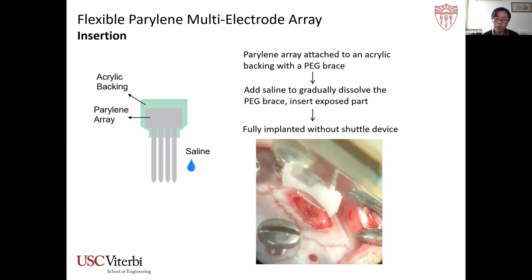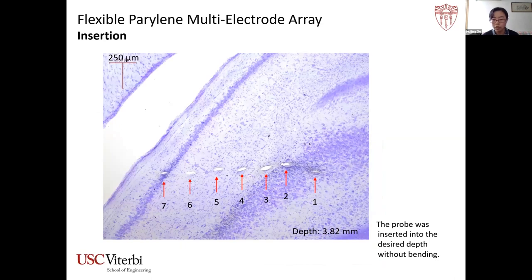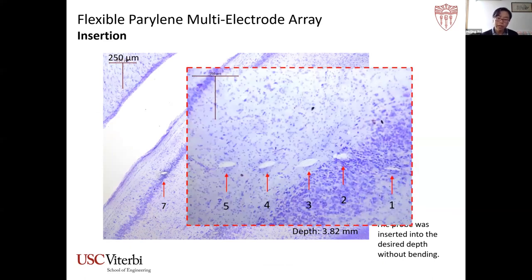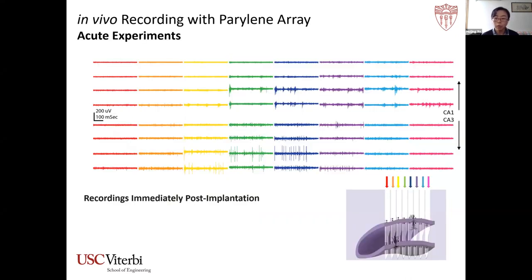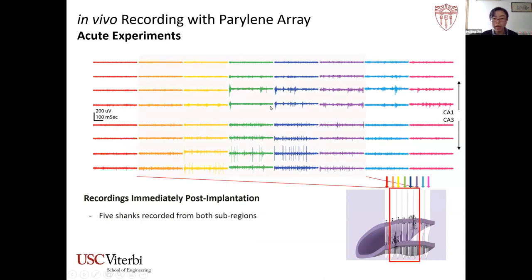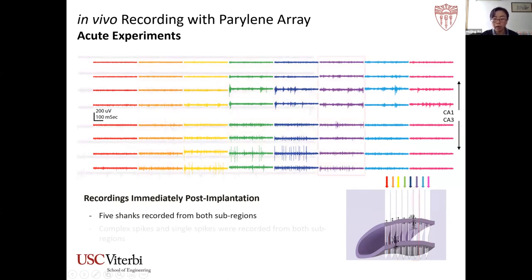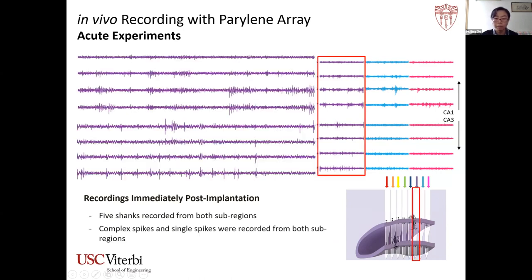Here is a horizontal brain slice collected at approximately 3.8 mm depth, showing traces caused by the parylene shanks. During and immediately after implantation, neural activity was monitored and recorded. An example shows neural activity recorded with the 8-shank parylene array from one animal — all 8 shanks recorded neural activity, and in 5 of the 8 shanks, both recording groups showed activity. A close look at one shank reveals complex spikes recorded from both the top and bottom groups, indicating simultaneous recording from both the CA1 and CA3 regions.